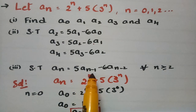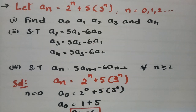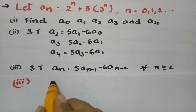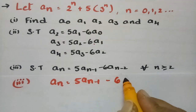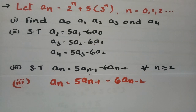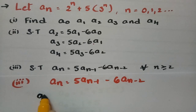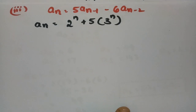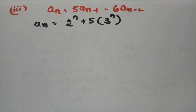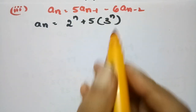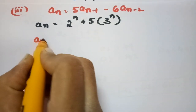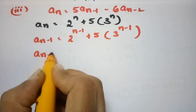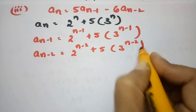Now we have to prove the general recurrence: a_n equals 5a_{n-1} minus 6a_{n-2}. Given that a_n equals 2^n plus 5 times 3^n, we derive a_{n-1} equals 2^{n-1} plus 5 times 3^{n-1}, and a_{n-2} equals 2^{n-2} plus 5 times 3^{n-2}. We will substitute these into the RHS.